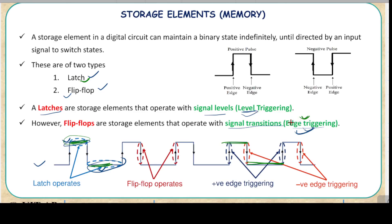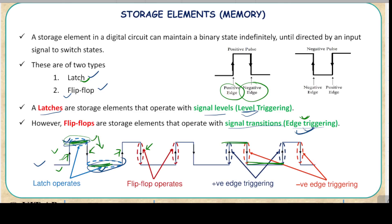The next type is edge-triggering. What is edge-triggering? In this signal you can see this side is an edge, this is an edge, this one is an edge, again this one is an edge. So edge means where the signal changes its level from high to low or low to high. There are two types of edges: one is called a positive edge and another is called a negative edge. Positive edge means wherever the signal changes its value from low to high — that is called a positive edge. And whenever the signal changes its value from high to low, it is called a negative edge.